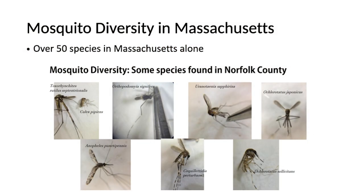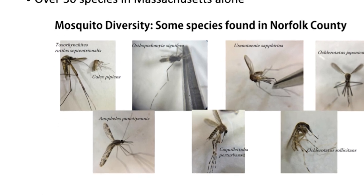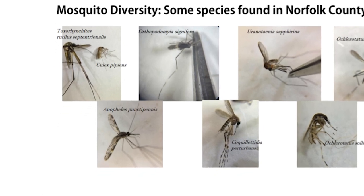In Massachusetts we have over 50 species. You might think in the northern regions there aren't as many species because it's colder, but we actually have quite a large number. I have some pictures of interesting ones here. This large one on the left is the elephant mosquito — its proboscis has this big curve like an elephant's trunk. It's one of our largest species and actually doesn't take a blood meal at all. They drink nectar and are pollinators as adults, and the larvae eat other mosquito larvae. So that's a really good mosquito to have around.